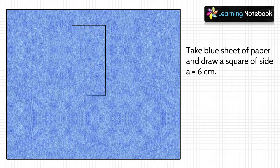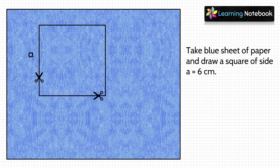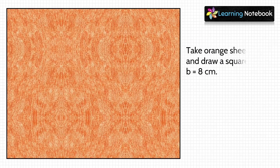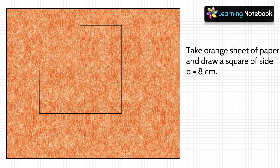In the next step, take a blue colored sheet and draw a square of side a = 6 cm on it, then cut out this square with a pair of scissors. Now take an orange sheet and draw a square of side b = 8 cm, and again cut out this square.